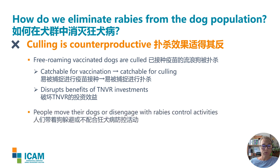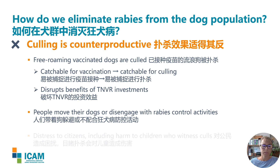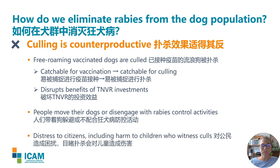Where owned dogs are caught up in culls, people will move their dogs to avoid culling teams. I have examples from Indonesia where rabies outbreaks were worsened by culling. Owners are likely to disengage with rabies control activities when they involve culling, running the risk of reducing vaccination coverage of owned animals. There is also huge potential for causing significant public distress, leading to complaints and, in some countries, public protest, as seen recently in both Morocco and Turkey.